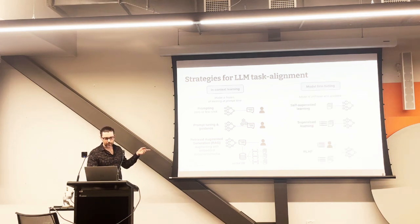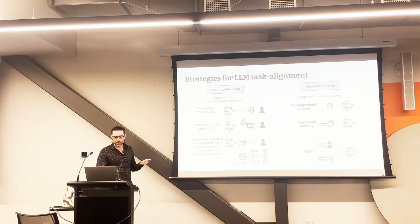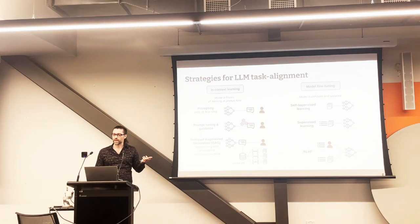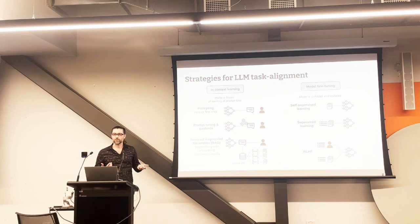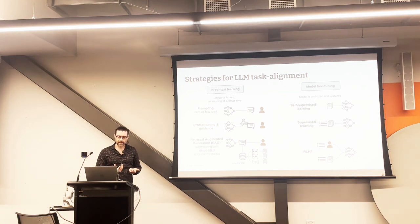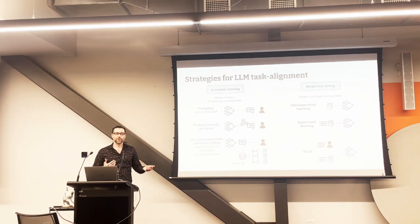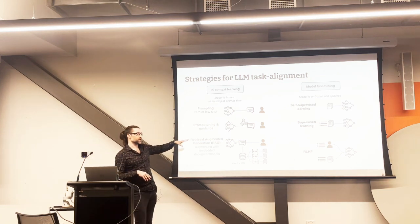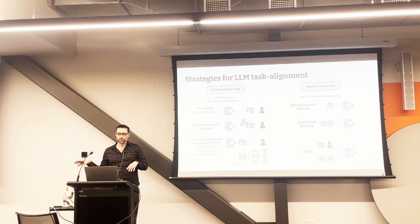That's in-context learning. Now we're moving on to model fine-tuning, where we are actually updating the weights of the model. To begin with, there's self-supervised learning, which is how the model was pre-trained - you would use this for domain adaptation. Maybe there's a whole bunch of technical jargon in the finance domain and you want to help it understand what that looks like. In practice, when people talk about fine-tuning their model, it's usually supervised learning - giving it the prompt input and output completion pairs.